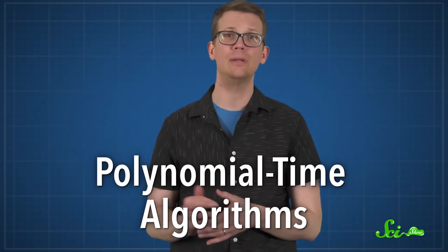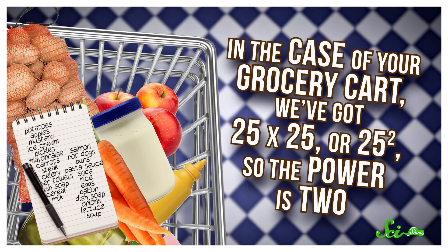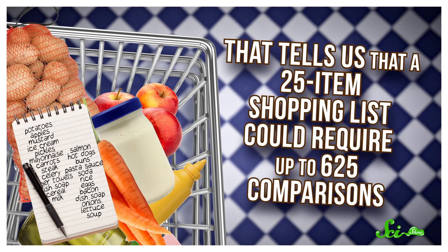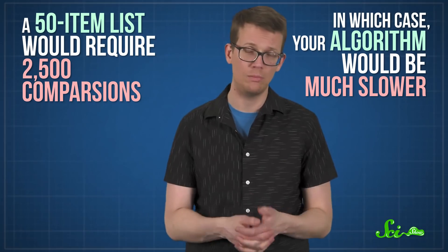Mathematicians call algorithms like these polynomial time algorithms, because their running time can grow like the number of items to some exponential power. In the case of your grocery cart, we've got 25 times 25, or 25 squared, so the power is 2. That tells us that a 25-item shopping list could require up to 625 comparisons. But a 50-item list would require 2500, so the algorithm would be much slower — it would take the computer longer to compare everything.